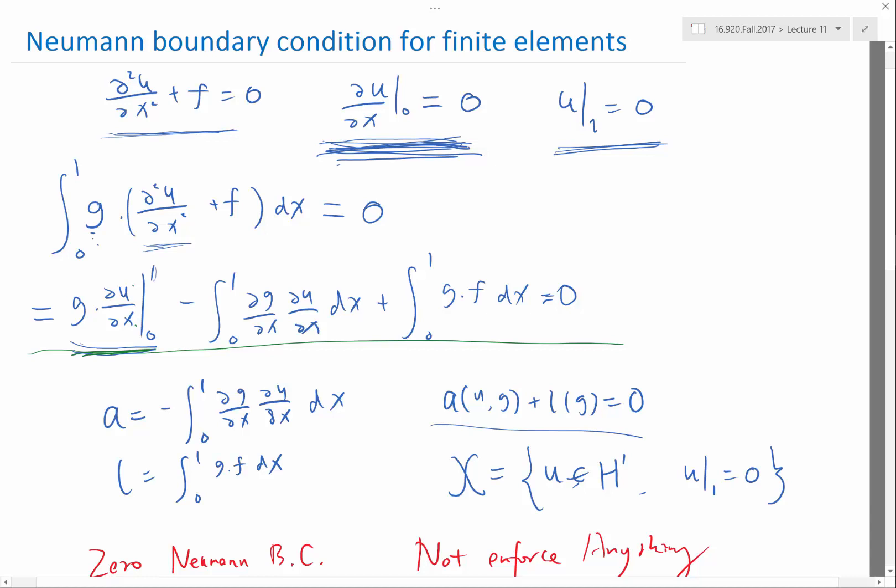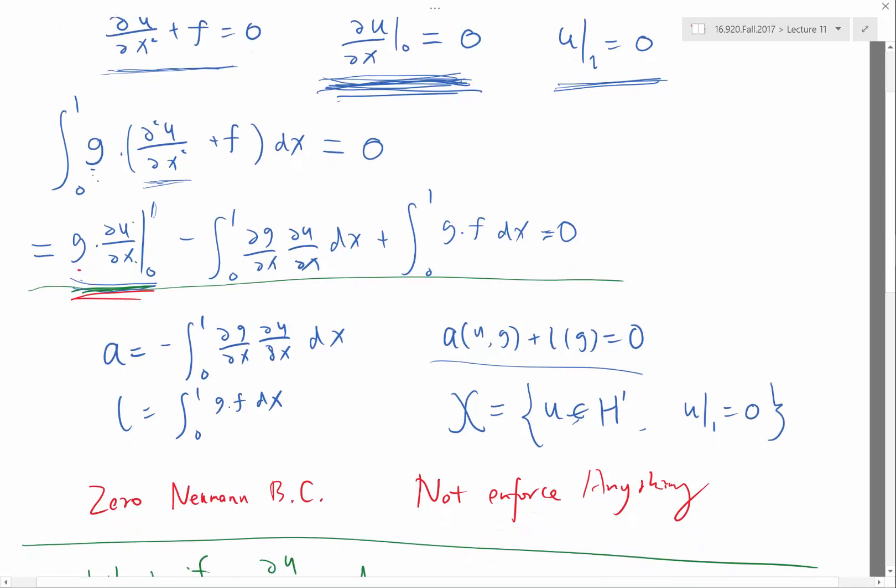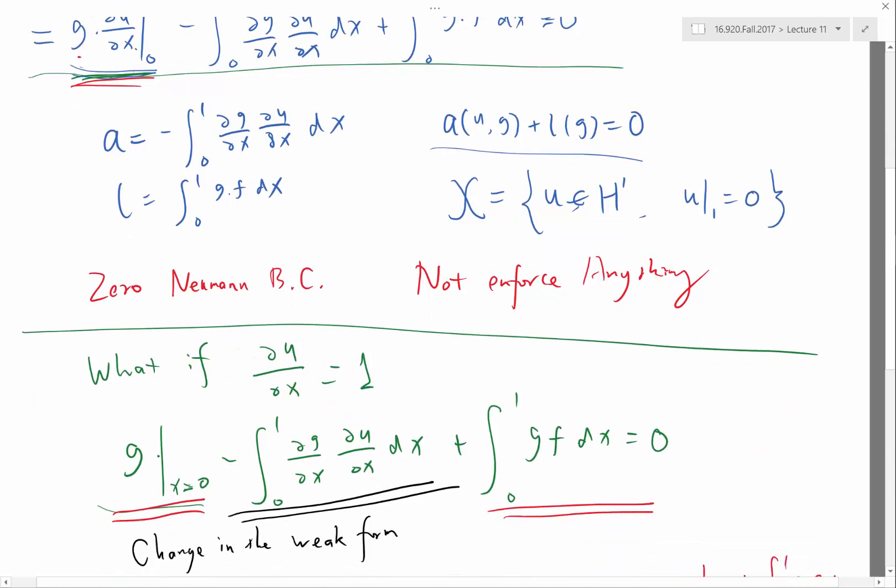Right? So, u is automatically 0 at x equal to 1. Then, because u is 0 at x equal to 1 we only need to test this equation to perturbations in u. So, g which corresponds to perturbations in u also satisfies the 0 boundary condition at x equal to 1. So, at x equal to 1 this term vanishes because g is 0.